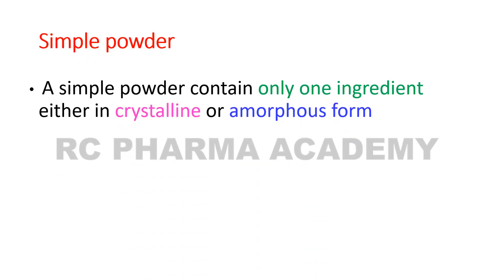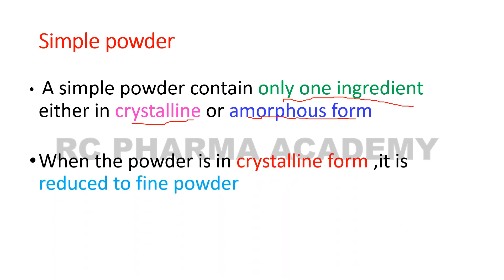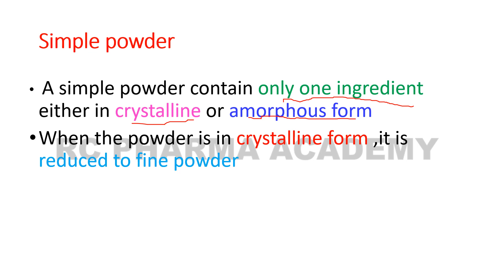Simple powders have only one ingredient. Most of them are either crystalline or amorphous. Amorphous is a smooth form of powder, while crystalline is a granular type. If the powder is in crystalline form, it is reduced to a fine powder. The size of the powder is reduced accordingly.